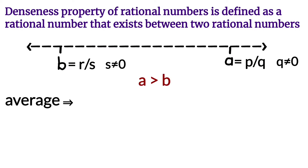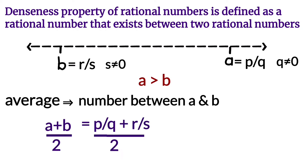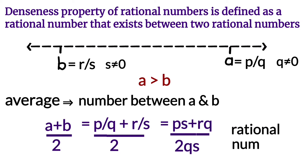Now we are going to find the average of these two rational numbers. The number between a and b is (a + b) / 2, which equals (p/q + r/s) / 2. Taking the LCM of p/q and r/s gives (ps + rq) / (2qs). We find that the average is also a rational number.